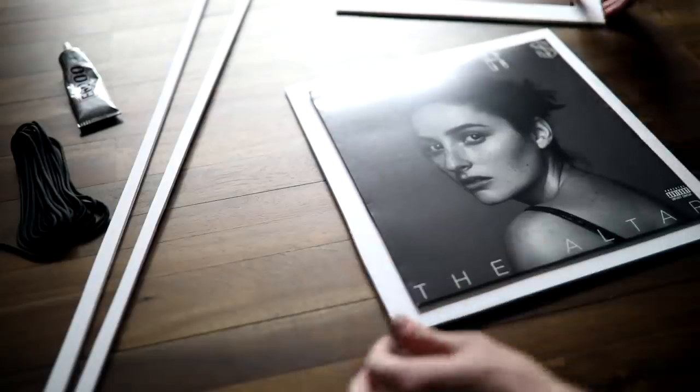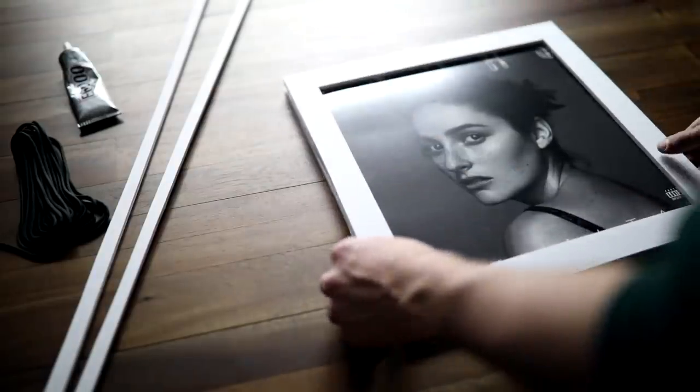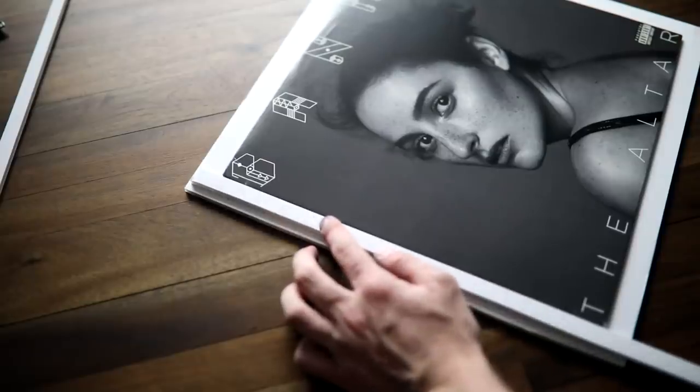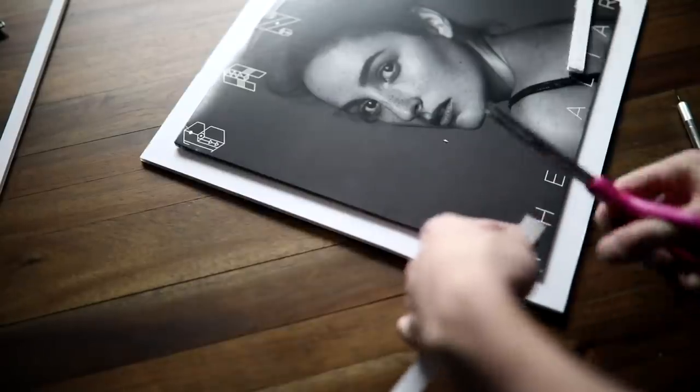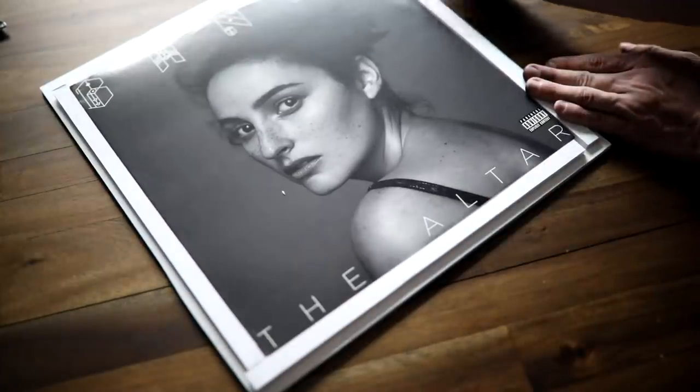After you cut out your 14 by 14 squares, on one of them you're going to cut a window out. I measured in one and a quarter inches on all edges and then cut out the square it created in the center. That will create the window which you'll see the album through.